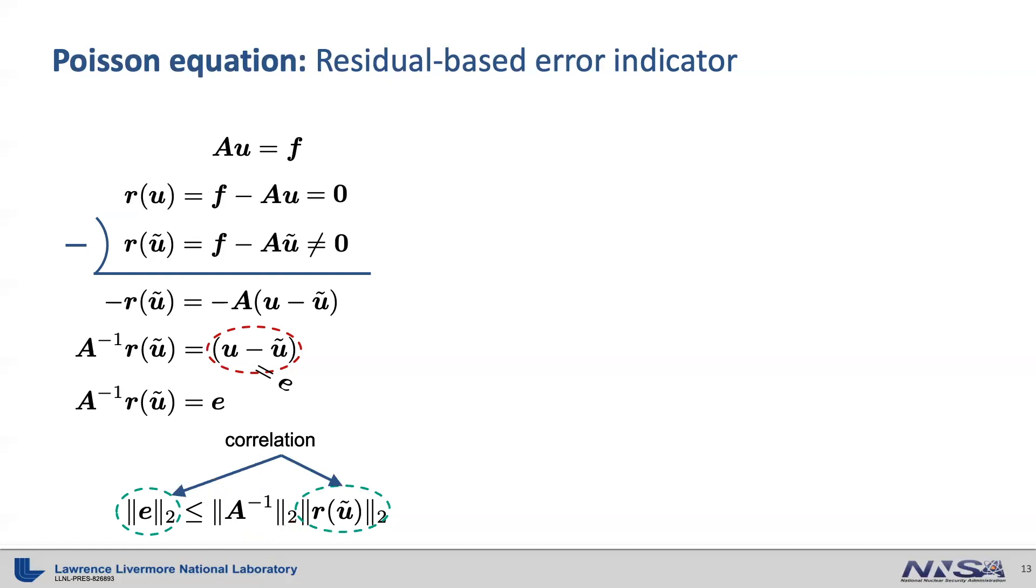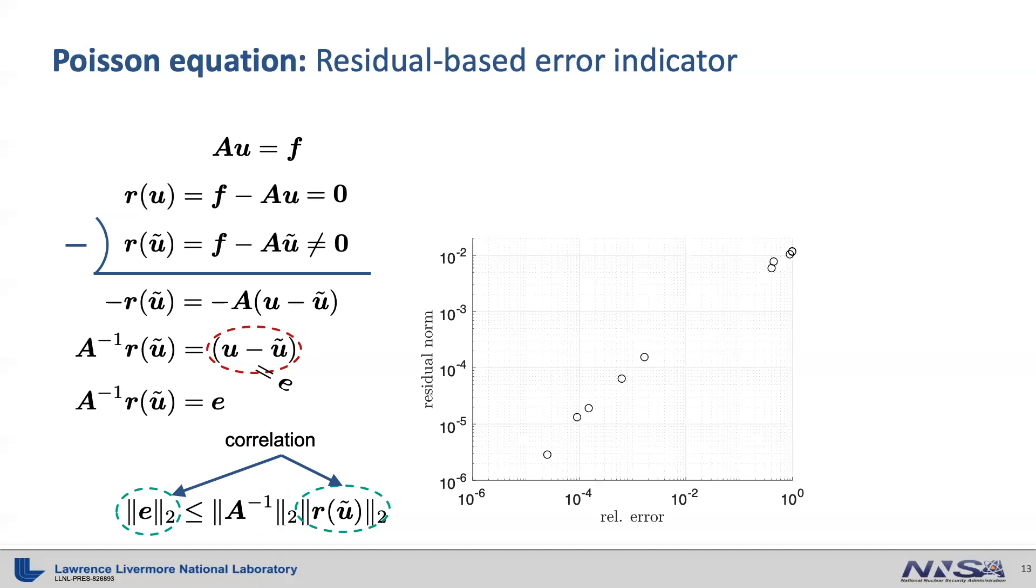Because the norm of the inverse matrix of A is constant, this bound shows the correlation between the error norm and the residual norm. For example, if we plot the relative error and residual norm of the reduced order model solutions for Poisson problem, we observe very strong correlation.